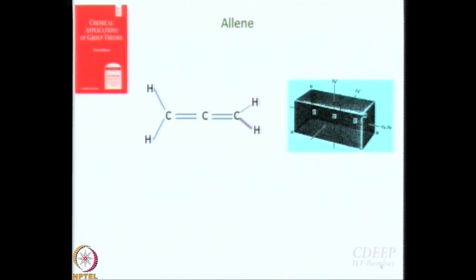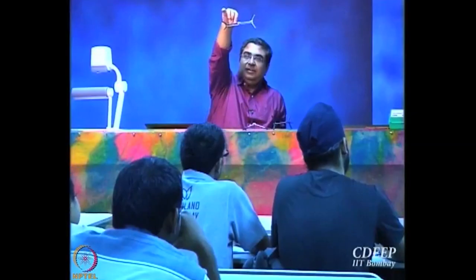We just started talking about allene in the previous class. This is what allene looks like. See once again — this plane and this plane are perpendicular to each other. It is basically like you started with a tetrahedron and pulled it in such a way that you introduced a distortion. So allene will have symmetry elements somehow related to those of tetrahedron; it is just that many symmetry operations would have been destroyed as a result of distortion.